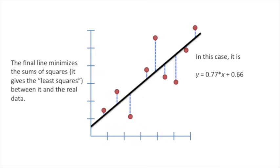In this case, the line is defined by the following equation: y equals 0.77 times x plus 0.66. Hooray! We've made it to the end of another StatQuest. Tune in next time for another exciting adventure in statistics land.